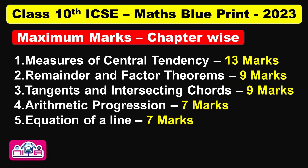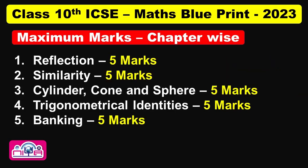Measures of Central Tendency got the maximum of 13 marks. Remainder and Factor Theorems and Tangents and Intersecting Chords each had 9 marks questions. Ratio and Proportion, Arithmetic Progression, and Equation of a Line had 7 marks questions each.